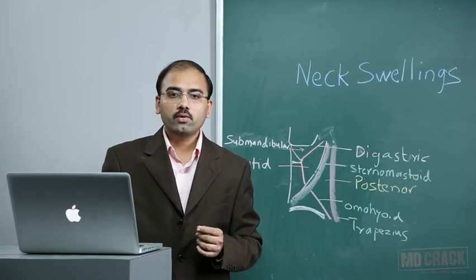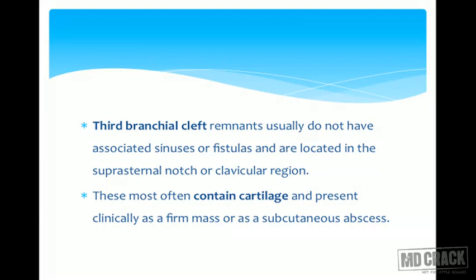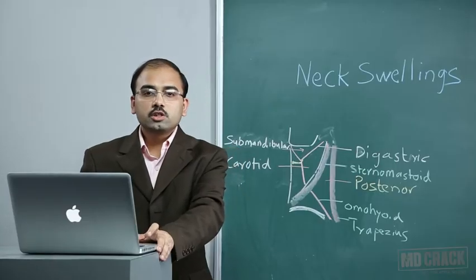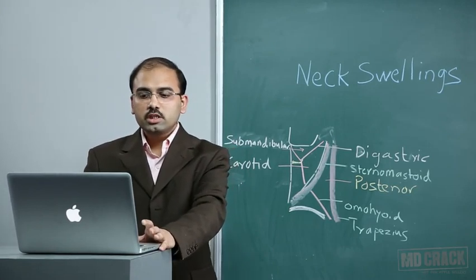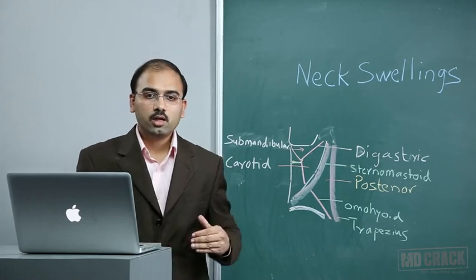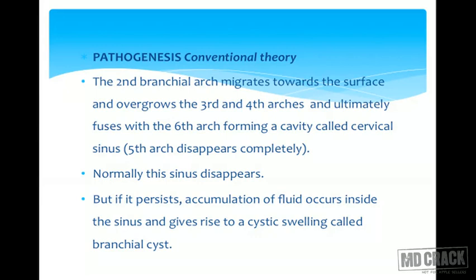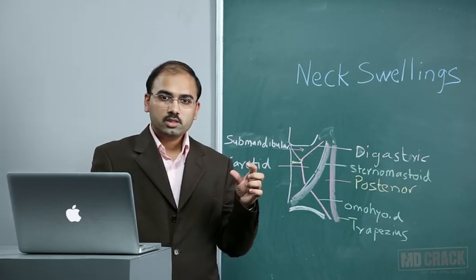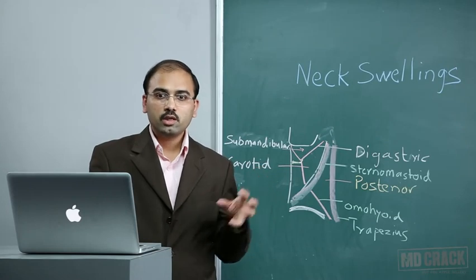Third branchial cleft remnants usually do not have associated sinuses or fistulas and are located in the suprasternal notch or clavicular region. They most often contain cartilage and present as a firm mass or subcutaneous abscess. Branchial cyst arises from a persistent cervical sinus formed due to fusion of the overgrowing second branchial arch with the sixth branchial arch. The second arch migrates and overgrows the third and fourth arches, ultimately fusing with the sixth arch to form a cavity called the cervical sinus. If this sinus persists, fluid accumulates and gives rise to the branchial cyst.